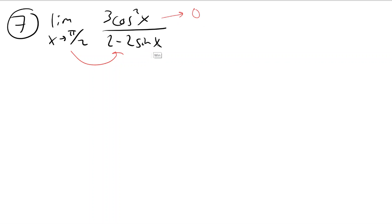The sine of pi over 2 is 1, so you end up with 2 minus 2, which goes to 0. So we hope that we don't get 0 over 0, by the way.